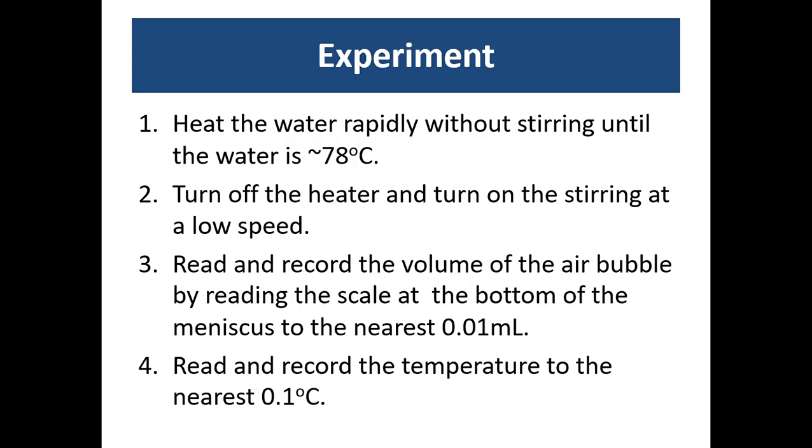The way you're going to do this is you're going to be reading and recording the volume of the air bubble by reading the scale at the bottom of the meniscus. Now notice that because the graduate cylinder is inverted the meniscus is actually also inverted. You'll read it to the nearest hundredth of a milliliter and making sure at each data point you've recorded the temperature to the nearest tenth of a degree celsius.